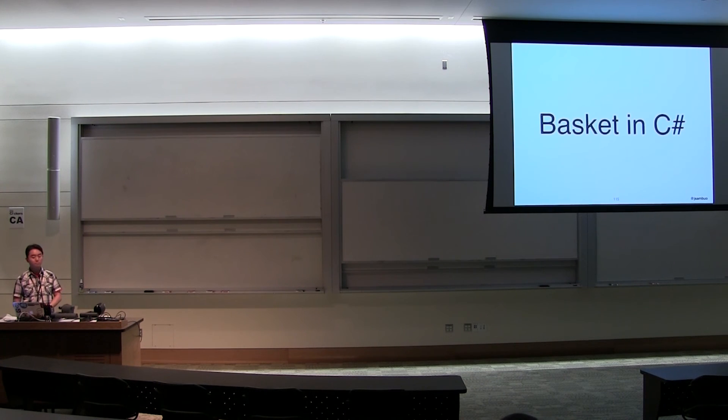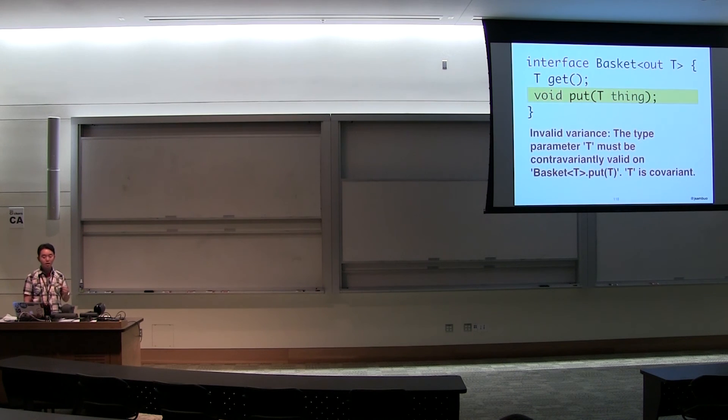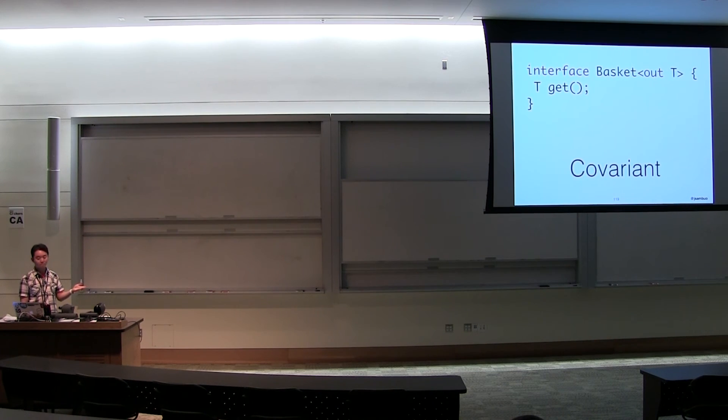Let's create a basket structure in C-sharp. Here's the interface for it. Notice how I can get something from the basket and I can put something into the basket. Therefore, it's an invariant structure. Let's say that we want to make this a read-only data structure. We can do this by marking the type parameter as covariant by using the out keyword as we only want to get something out of the basket. Now, if you actually try to compile this, the C-sharp compiler is actually smart enough to know that this isn't a valid structure since we left the put method in there, which has an input of T. The compiler warning states, invalid variance, type parameter T must be contravariantly valid on basket.put. T is covariant. So now the next time you see this message, hopefully you'll know what to do. In this case, we can just remove the put method and now we have a read-only basket with just the get method.